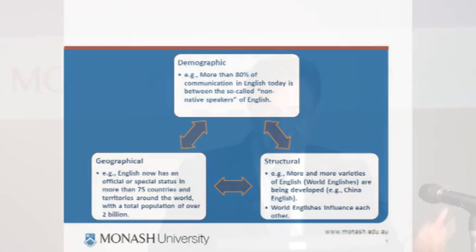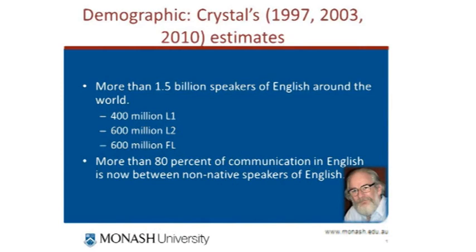David Crystal provided estimates of speakers of English: more than 1.5 billion speakers exist around the world — 400 million speak it as L1, 600 million as L2, and 600 million as a foreign language. David Graddol has questioned the validity of these classifications in today's world. More and more L2 speakers are becoming L1 speakers, and foreign language speakers are becoming second language speakers, so this classification is already blurred.